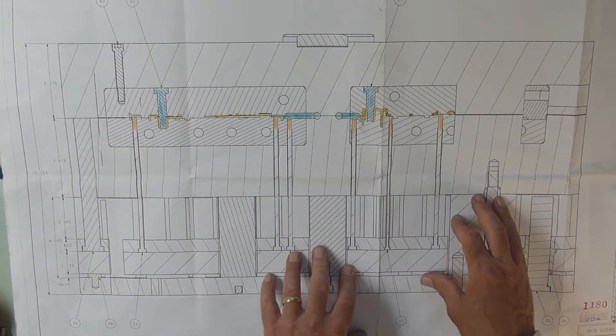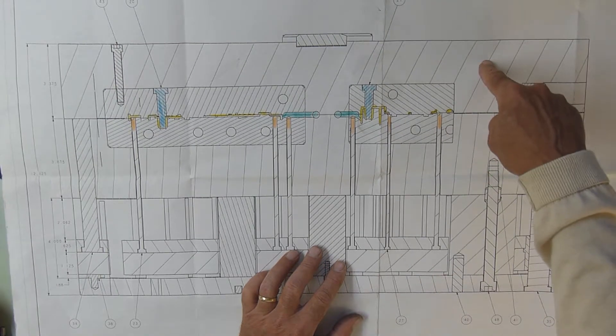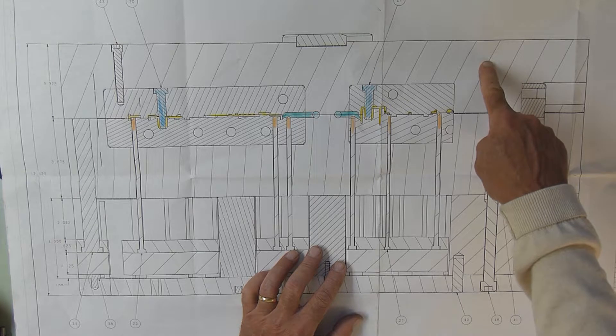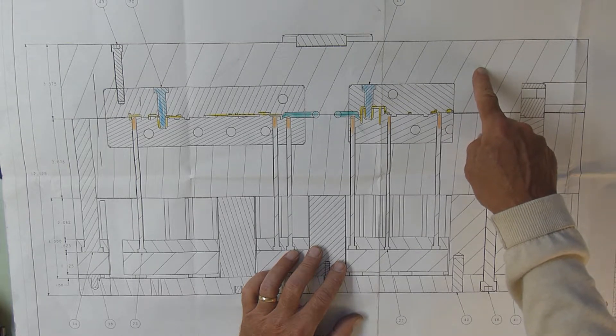So what are we looking at here? Well, this side right here is called the front half of the mold, always, and it's always called the A plate or the A side of the mold—A or front half. This is the side of the mold that the plastic is injected to from the press.